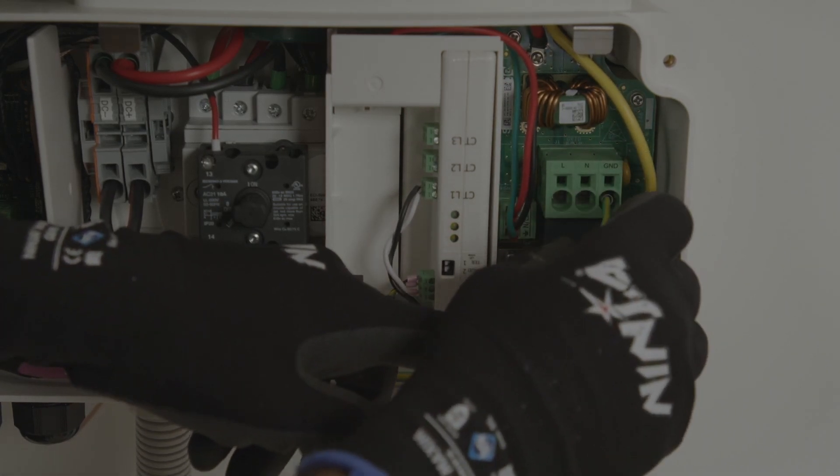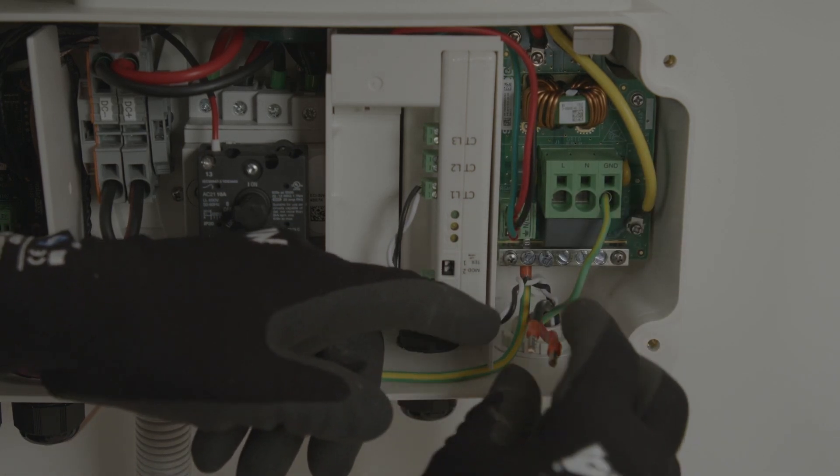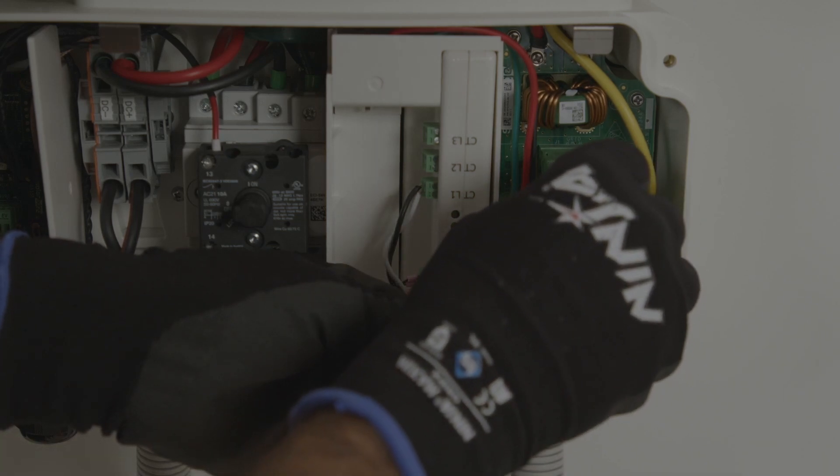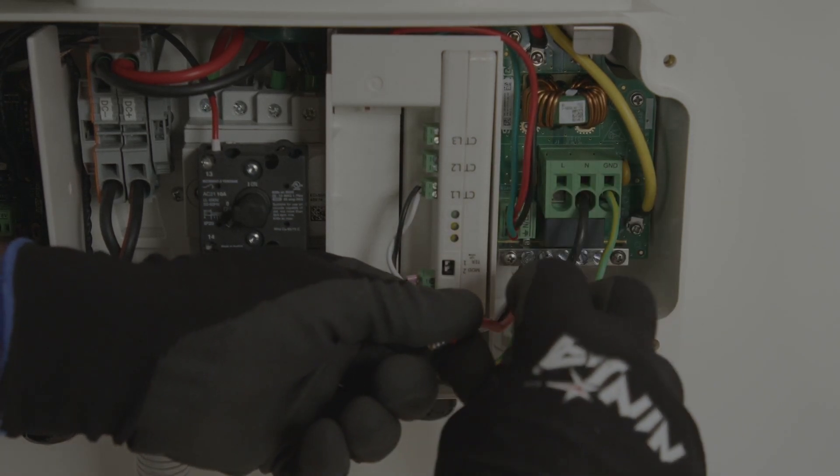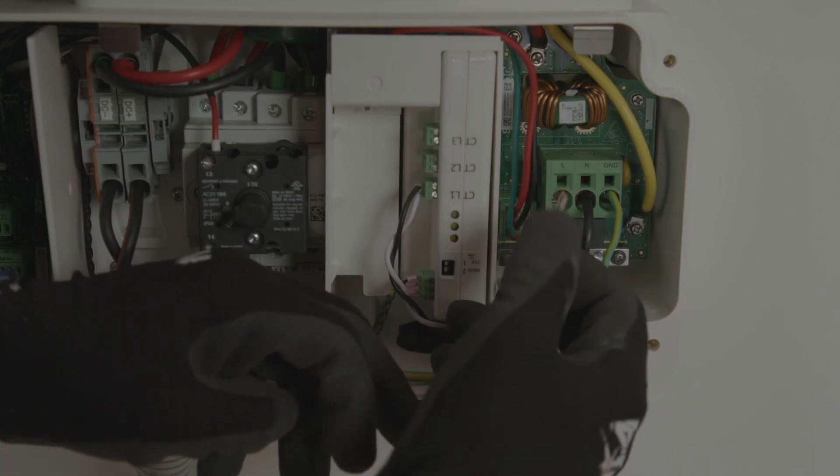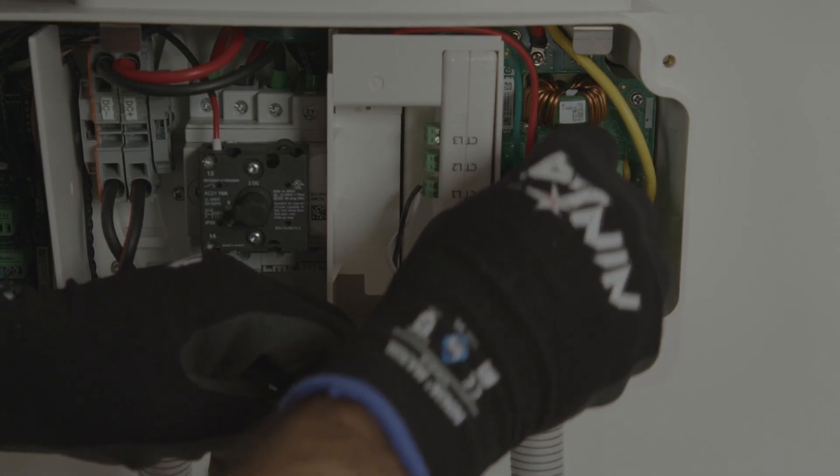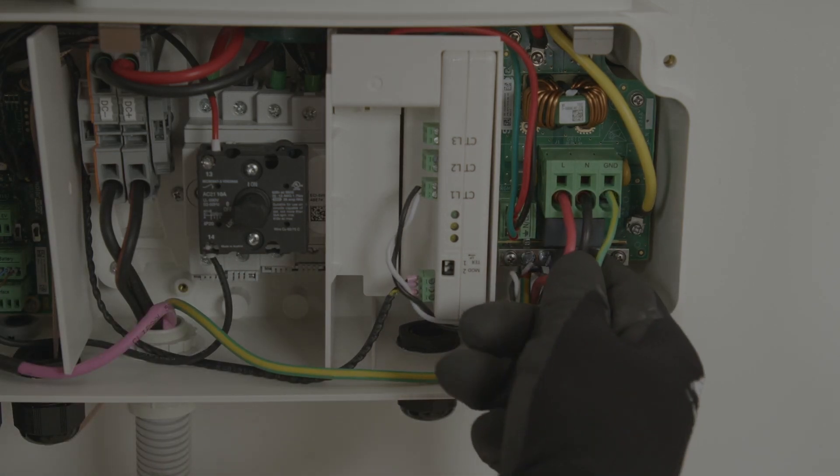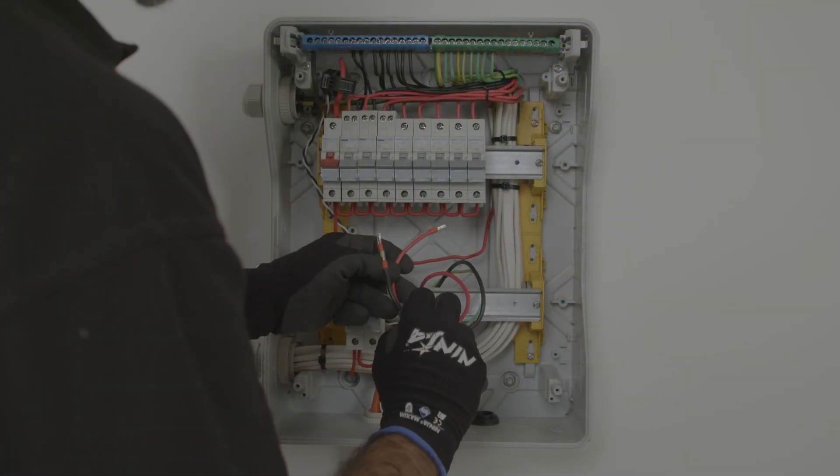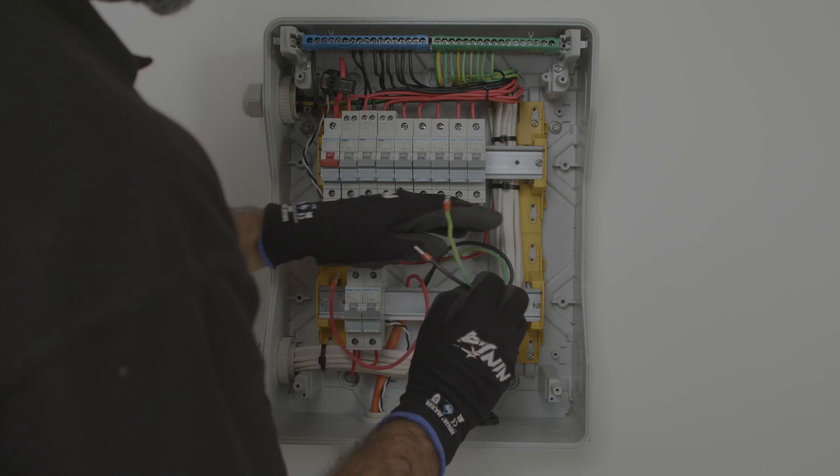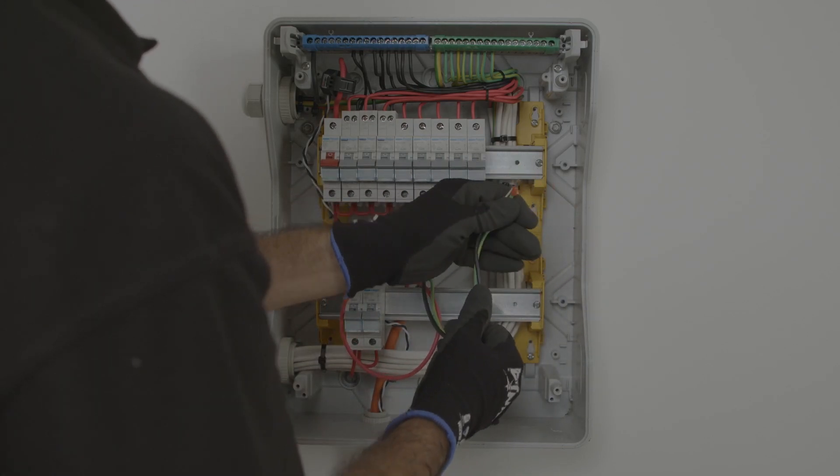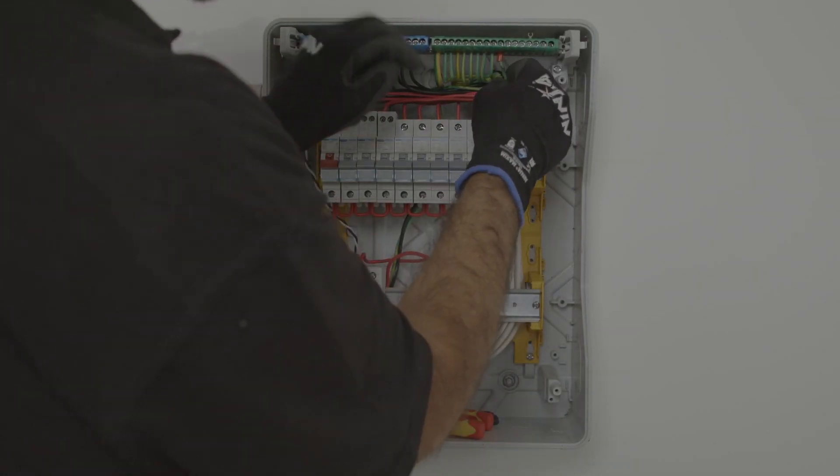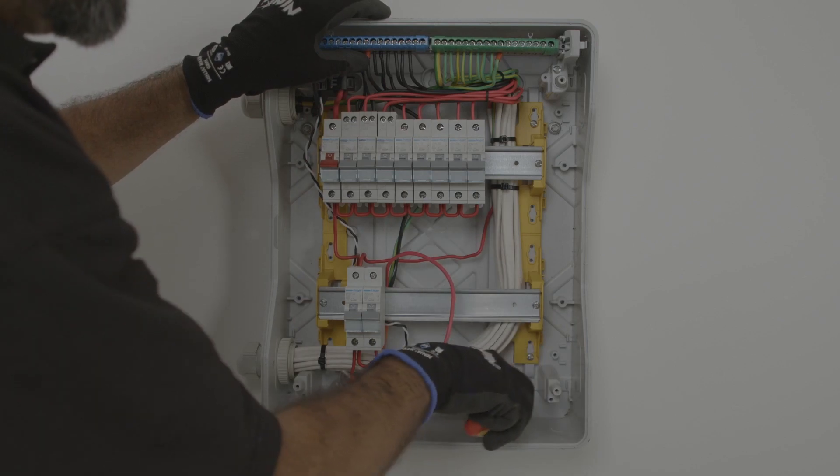Simply wire the AC connections to the gland with the markings provided: live, neutral and ground. Then in the switchboard, wire the neutral, earth and the live to an appropriately sized MCB.